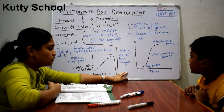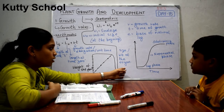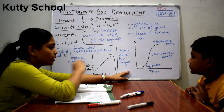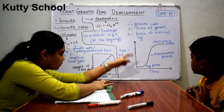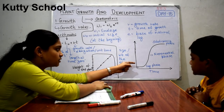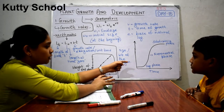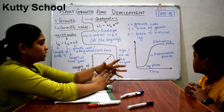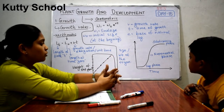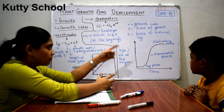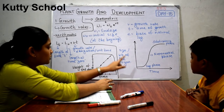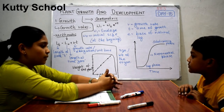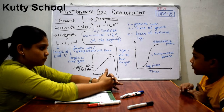Geometric growth has three phases. The first is the lag phase — it is the initial slow phase where growth is slow. The middle phase is the exponential phase, also called the log phase, where cells divide enormously into a huge number. The last is the stationary phase where growth rate stops. The resulting curve is known as the S-curve or sigmoid curve. Geometric growth occurs in the majority of plant parts — leaves, branches, and other parts.